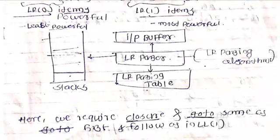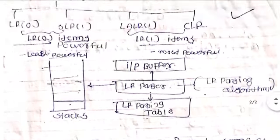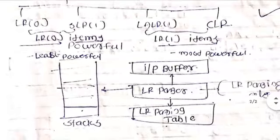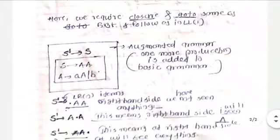The LR parser uses the concepts of a stack, an input buffer, an LR parser, and an LR parsing table. For all four categories — LR0, SLR1, LALR1, and CLR — the stack, input buffer, and LR parser are the same. The main difference is only in the LR parsing table. The stack is useful for the collection of production rules, the input buffer holds the input symbols, and the LR parser determines what kind of parsing is used.